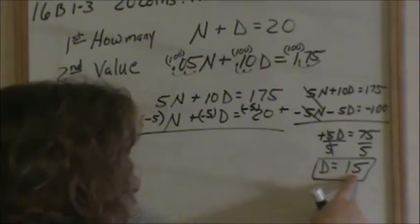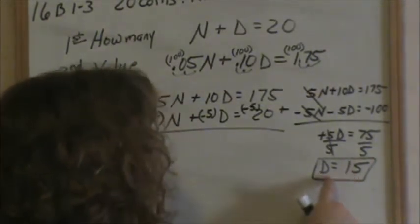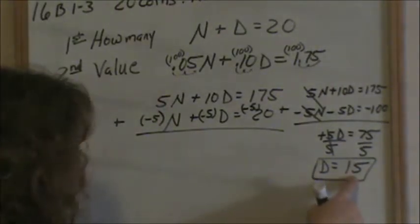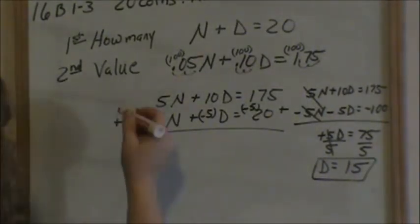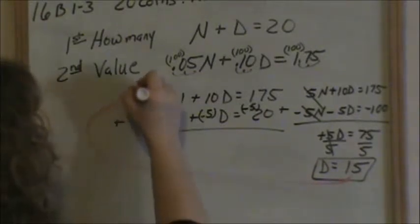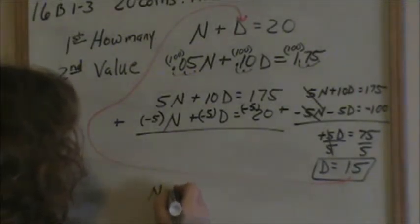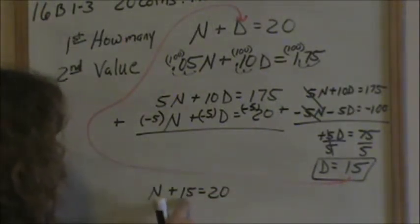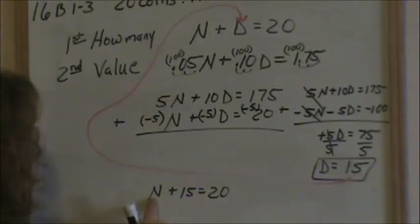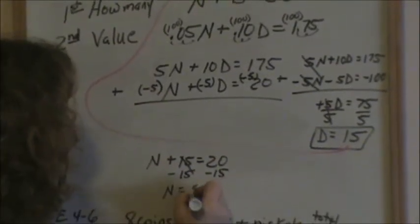Now that I know I have 15 dimes, I can substitute that back into one of my equations. I personally think it's easier to substitute it back into the first equation to solve for the number of nickels. The number of nickels plus the number of dimes equals 20. Most of you should be able to do this in your head — if I have 20 coins and 15 dimes, then I have 5 nickels. Algebraically, subtract 15 from both sides, and the number of nickels is 5.